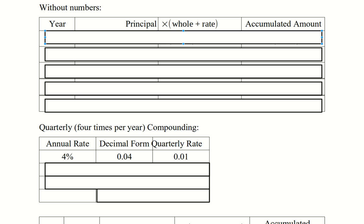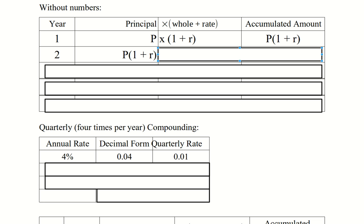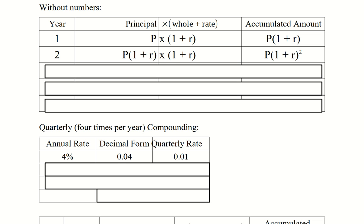Now let's do the same thing but without any numbers at all. In the first year, we start with a principle of P. Over the course of the year, we get the whole amount back — that's the 1 — and we get the interest, which is P times R. So at the end of that first year, we have P times the sum of 1 and R. The second year starts with that ending amount, P times 1 plus R, and over the course of the year we get the whole amount back and the interest, multiplying by 1 plus R again — meaning we're squaring 1 plus R.